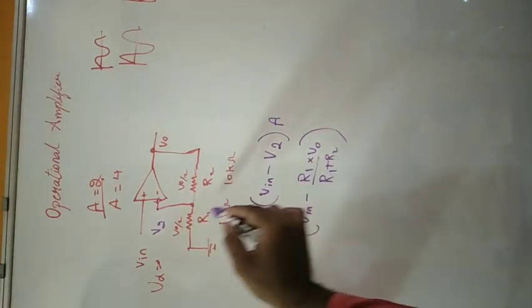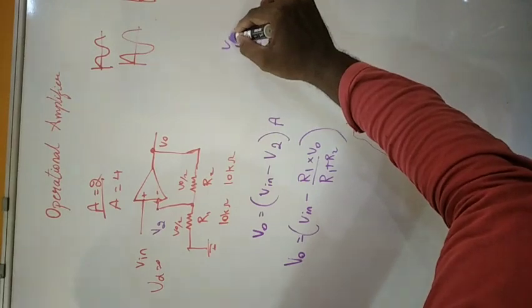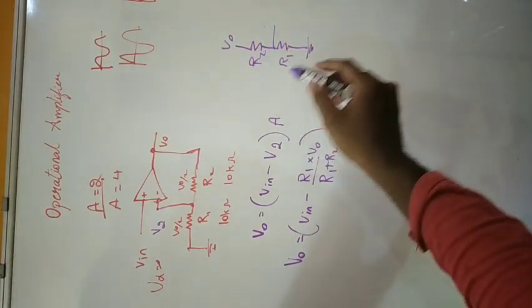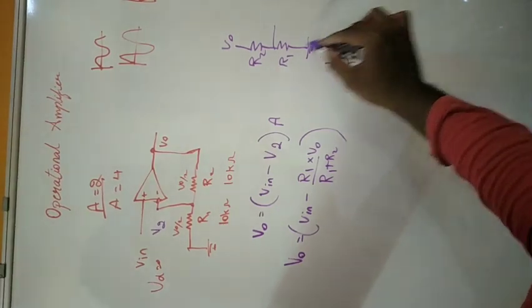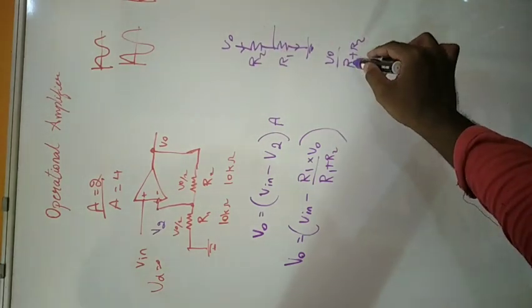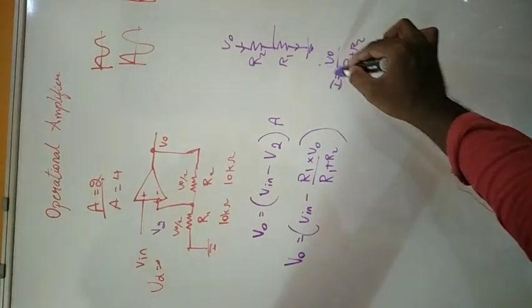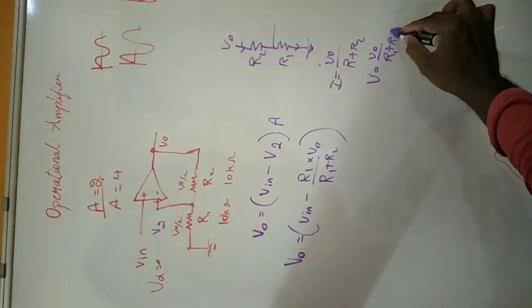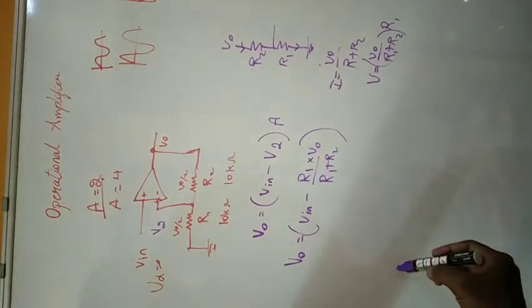To compute the voltage across R1, we find the current through the series branch as I = V0/(R1 + R2). Multiplying that current by R1 gives the voltage across R1, which equals R1/(R1 + R2) × V0. Now we substitute V2 with this expression. By solving, we get: V0 + V0 × (R1/(R1 + R2)) × A = Vin × A. To find the gain (output divided by input), we take V0 common: V0 × [1 + A × R1/(R1 + R2)] = Vin × A. So V0/Vin = A / [1 + A × R1/(R1 + R2)].